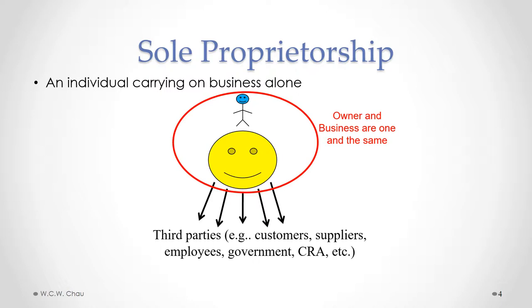We'll talk about this in further detail a little later. But for example, if the business owes money, because the owner and the business are one and the same, it's the owner that personally owes that money.